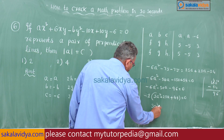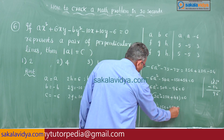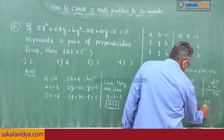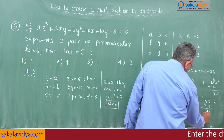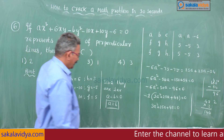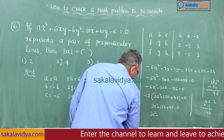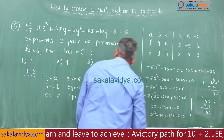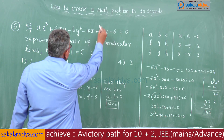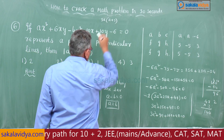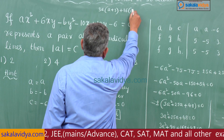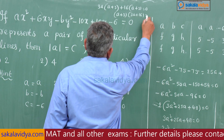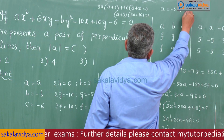We solve this quadratic equation. Factoring: 48 × 3 = 144 = 16 × 9. So 3A² + 9A + 16A + 48 = 0, which factors as 3A(A + 3) + 16(A + 3) = 0. Therefore A = -3 or A = -16/3.